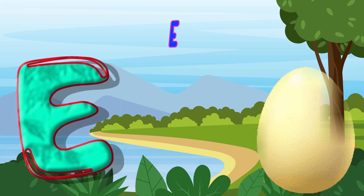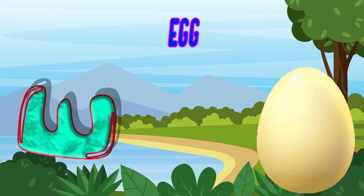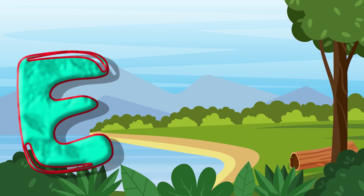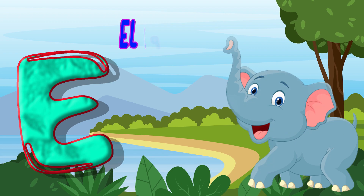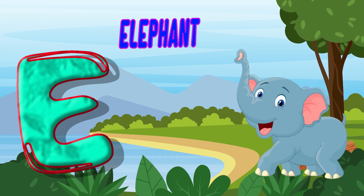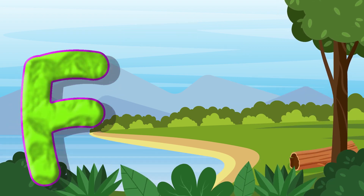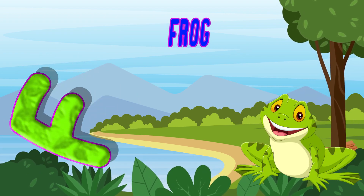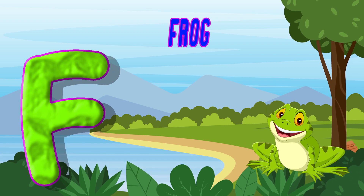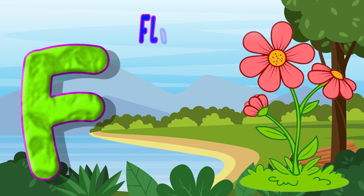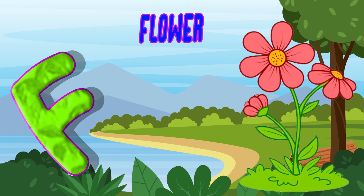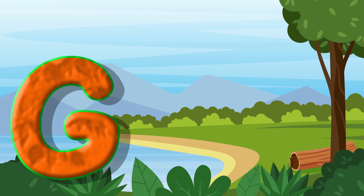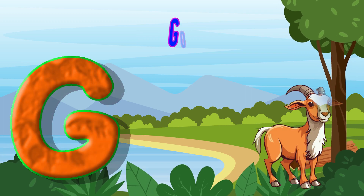E is for Egg. E, E, Egg. E is for Elephant. E, E, Elephant. F is for Frog. F, F, Frog. F is for Flower. F, F, Flower.